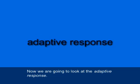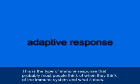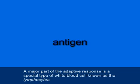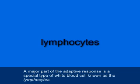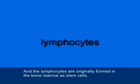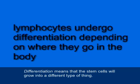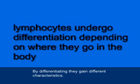Now we're going to look at the adaptive response — the type of immune response that most people think of when they think of the immune system. An antigen is any substance that the body regards as foreign. A major part of the adaptive response is a special type of white blood cell known as the lymphocyte. Lymphocytes are originally formed in the bone marrow as stem cells, and these immature lymphocytes then circulate through the body where they undergo differentiation — meaning the stem cells grow into a different type of cell, gaining different characteristics.